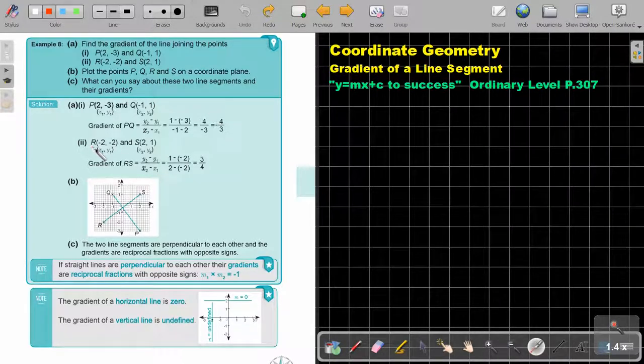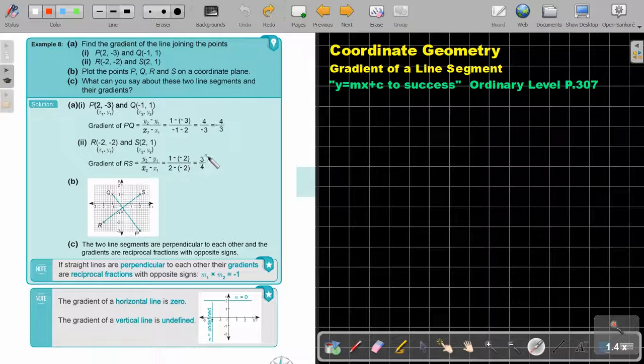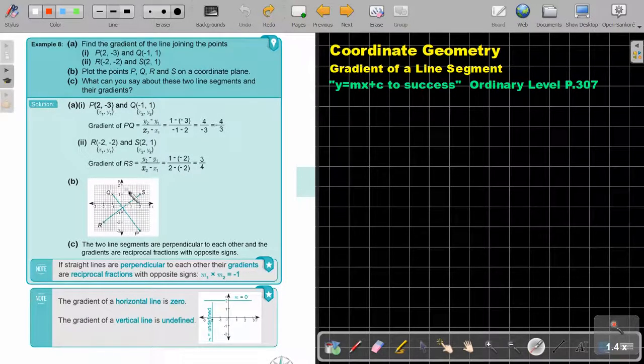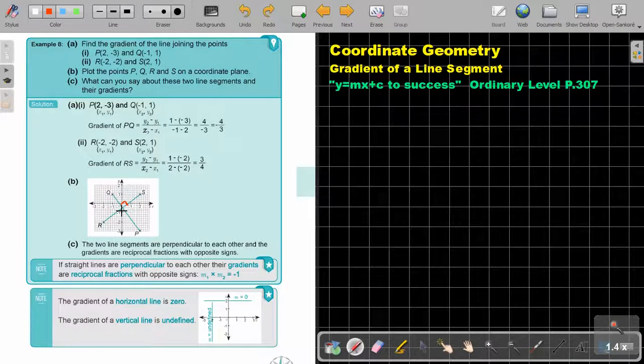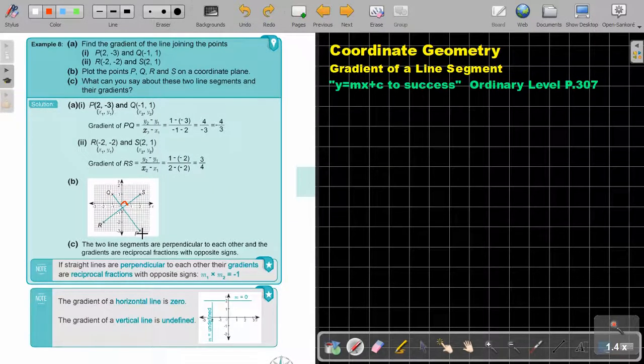I do exactly the same with RS. I'm substituting and I'm getting positive 3 over 4. Now I plot the points. What can you see about the points? Do you all see that there is going to be a 90 degree angle? So basically these two lines will be perpendicular.